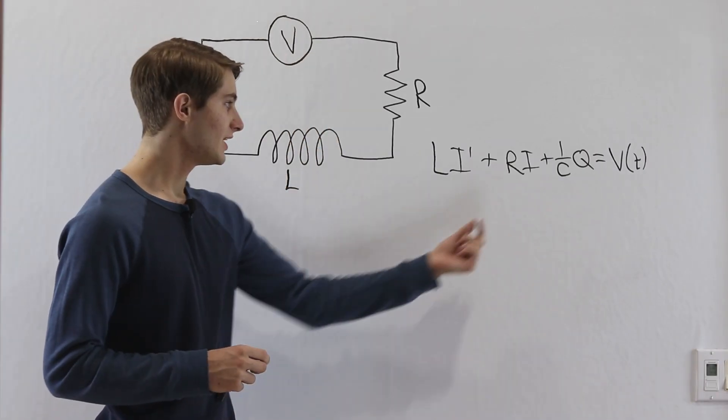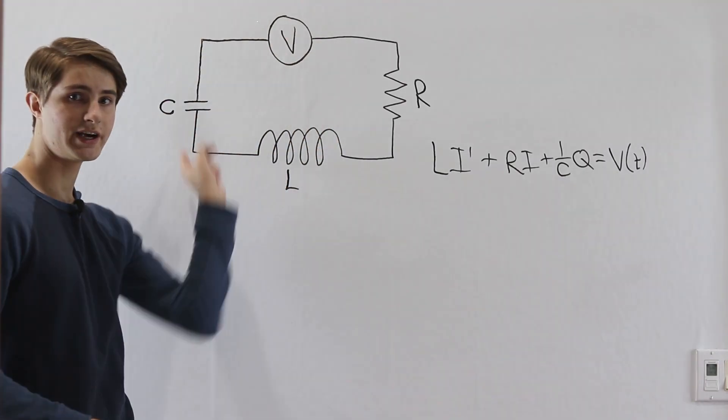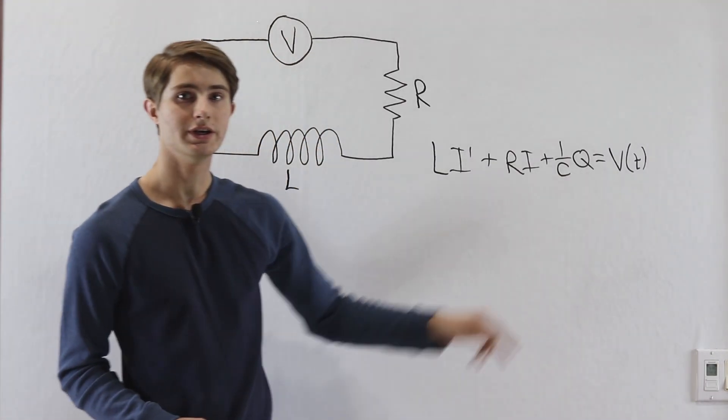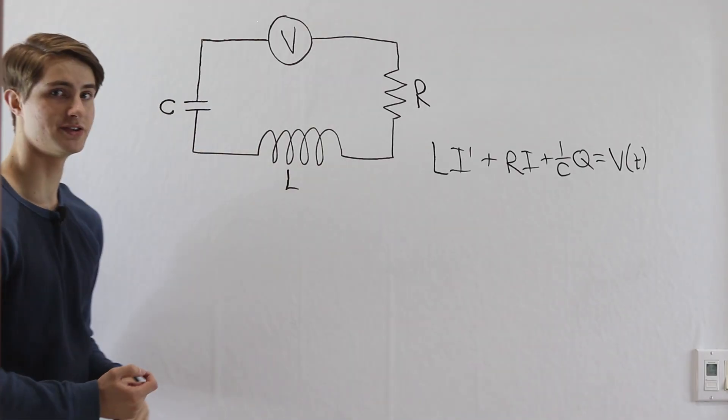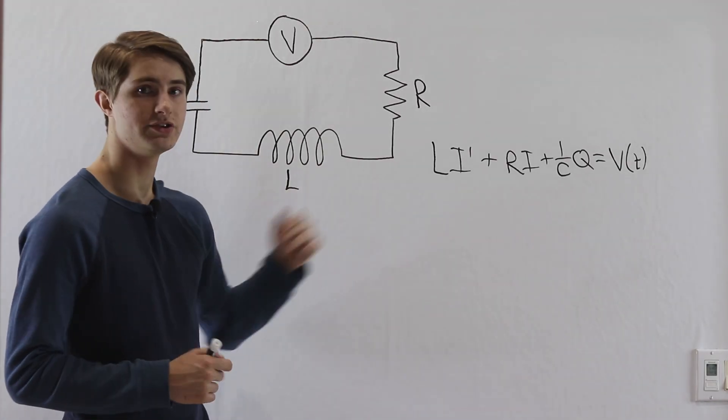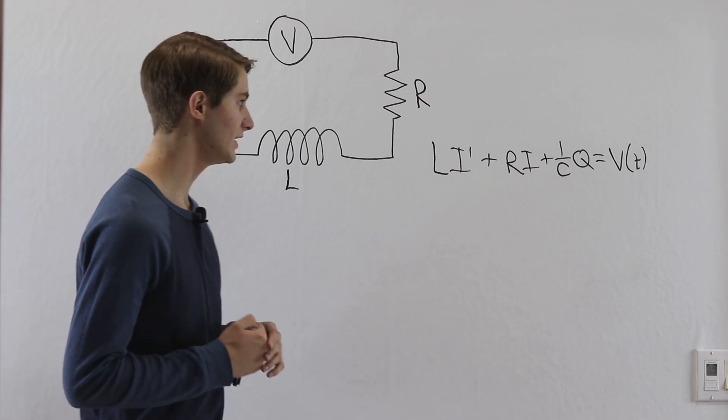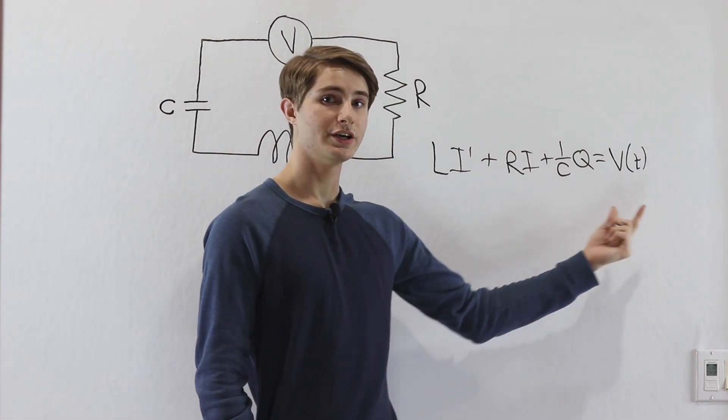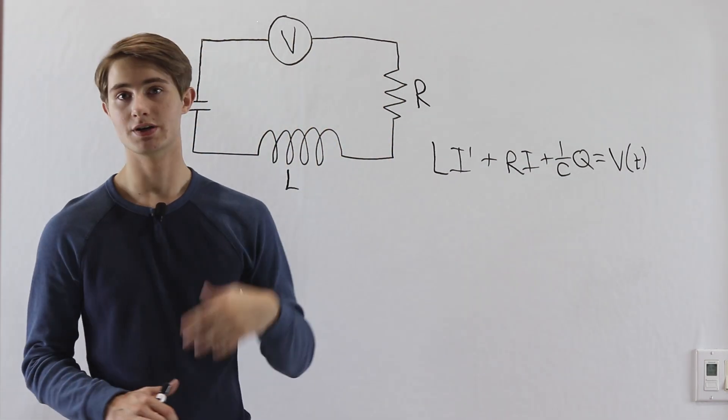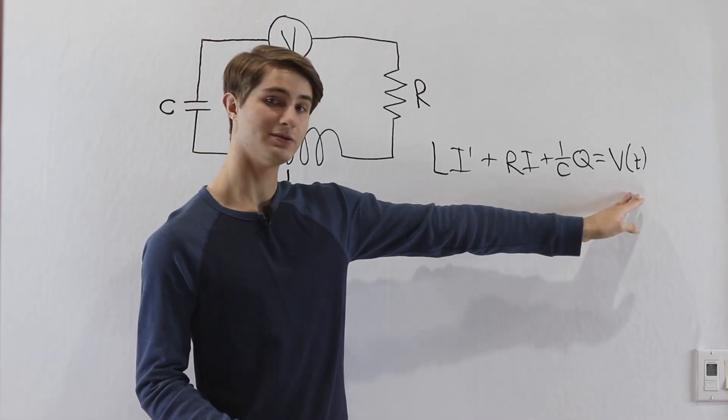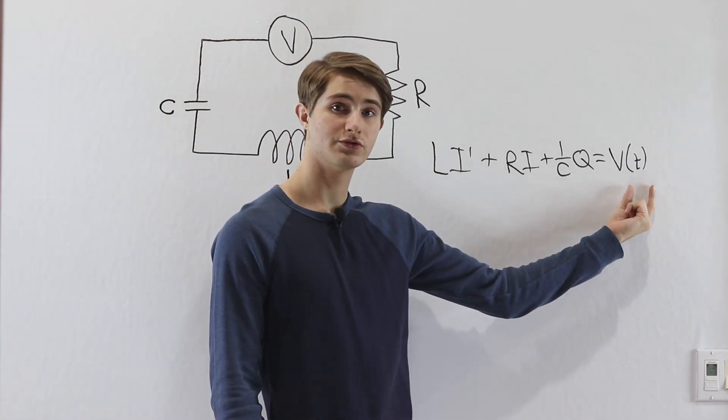So in this case I is the current through the entire circuit, and Q is the charge on this capacitor with capacitance C. Now first this differential equation might seem a little strange. We know that the voltage value is set at the beginning, so it might be a constant like 5 or it might be some function of T, but we know what this voltage is.